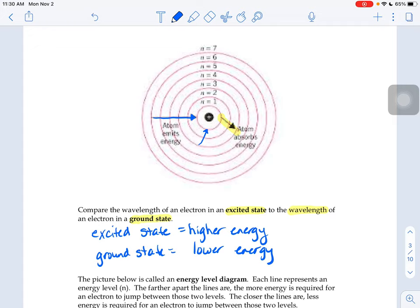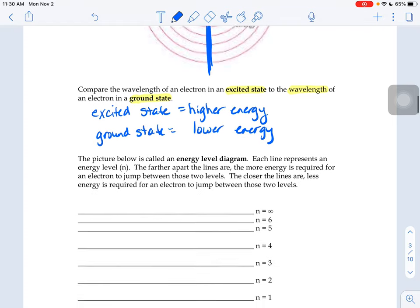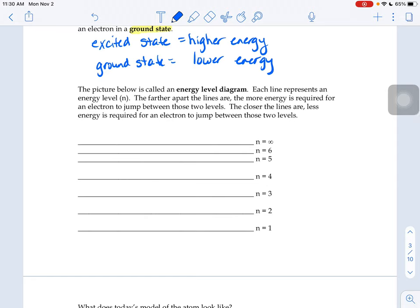I want you to picture if I could somehow take scissors to this picture of the atom, slice it right here, and pretend like these are strings. Then if I were to straighten out the strings, n=1 would be all the way at the bottom and n=7 would be all the way at the top. It might look something like this, what we call an energy level diagram.